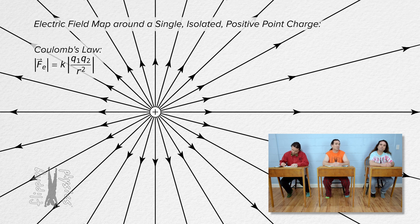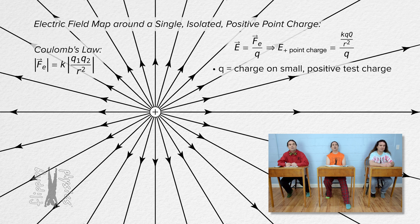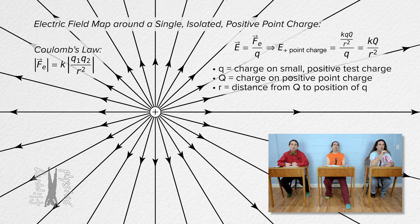Therefore, the electric field which surrounds a positive point charge is always directed outward away from the positive point charge and decreases in magnitude as we get farther from the positive point charge. We can determine the equation for that electric field by plugging the electrostatic force equation into the electric field equation. Using lowercase q for the positive test charge and uppercase Q for the positive point charge, we get that the electric field equals the Coulomb constant times the point charge all over the square of r. Here r is the distance from the center of the positive point charge to the location of the positive test charge, or the location where we are defining the electric field.